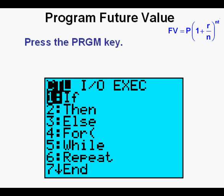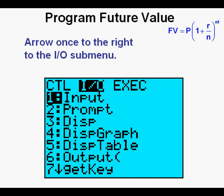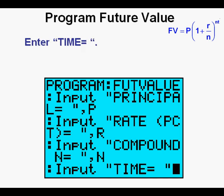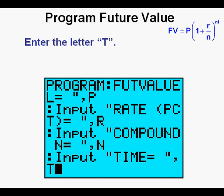Press the program key, arrow once to the right to the input/output submenu, press enter to choose input option 1. Enter TIME= inside quotation marks as shown. Time in this formula will usually be years, but could be another time unit such as hours or days depending on the situation. Create the letter T by pressing the alpha key, then the number 4 key with the green T above it. Press enter.